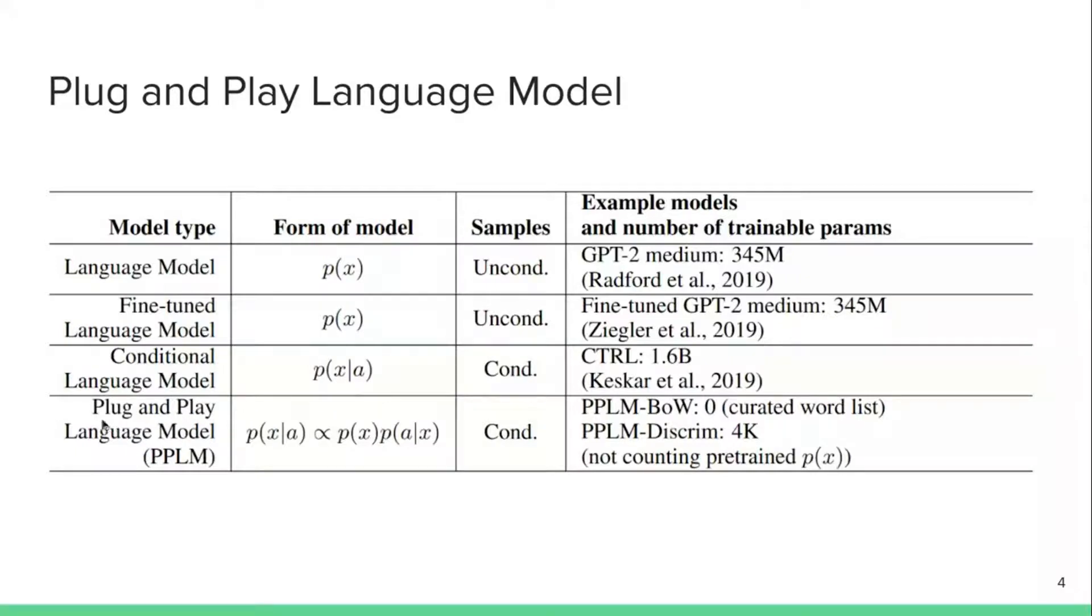In this paper, they're proposing a plug-and-play language model, PPLM, which again models the probability distribution of text x given some attribute a. However, they're decomposing this into the probability of the text x, which is the original language model, and the probability of some attribute given the text x. This is again a conditional language model, however one advantage of this approach is that you don't need to retrain the p(x), the big language model, every time you have a new attribute in your text. You can keep the same p(x) model.